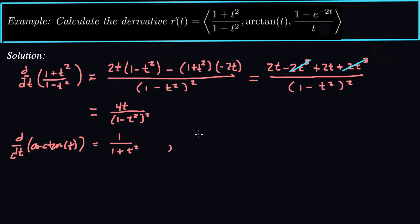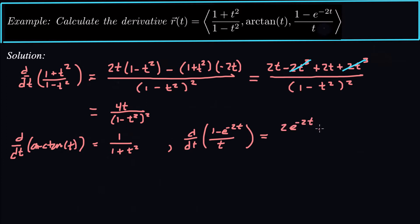For the third component, (1 - e^{-2t}) over t, that's another quotient rule. The derivative of the top is -(-2)e^{-2t}, which is positive 2e^{-2t}, times the bottom t, minus the derivative of the bottom (which is 1) times the top (1 - e^{-2t}), all over the bottom squared, which is t².